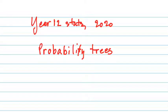So last time we were here, we began our look at probability trees, which is just another way of being able to organize your thoughts about probability when you have probabilities where there are more than one thing going on — like you win a game, lose a game, that kind of thing.